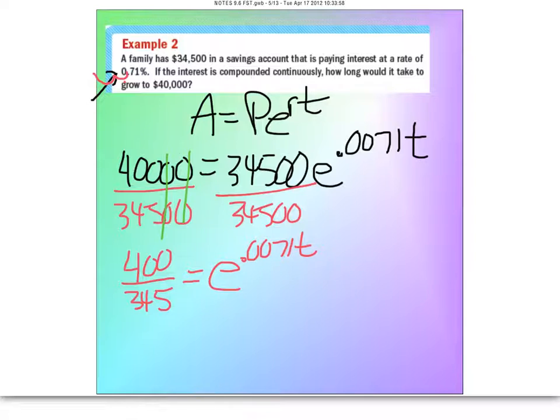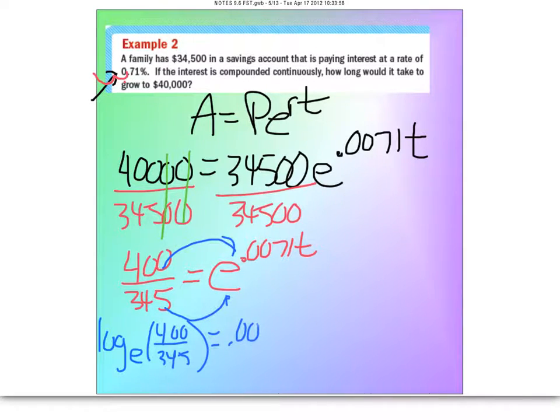Now the exponent is isolated by itself, so let's rewrite it as a logarithm. This is log base E of that equals this. So if we write that, let's kind of do the swoosh so you can see it. And I'm going to put log base E for now of 400 over 345 equals 0.0071T.